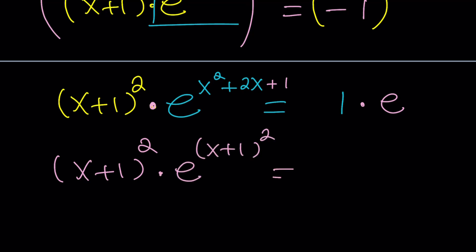e to the power x plus 1 squared. And this should be your t e to the t, right? Does that make sense? Now, here's your t in case you didn't see it. And that's your e to the t. Make sense?